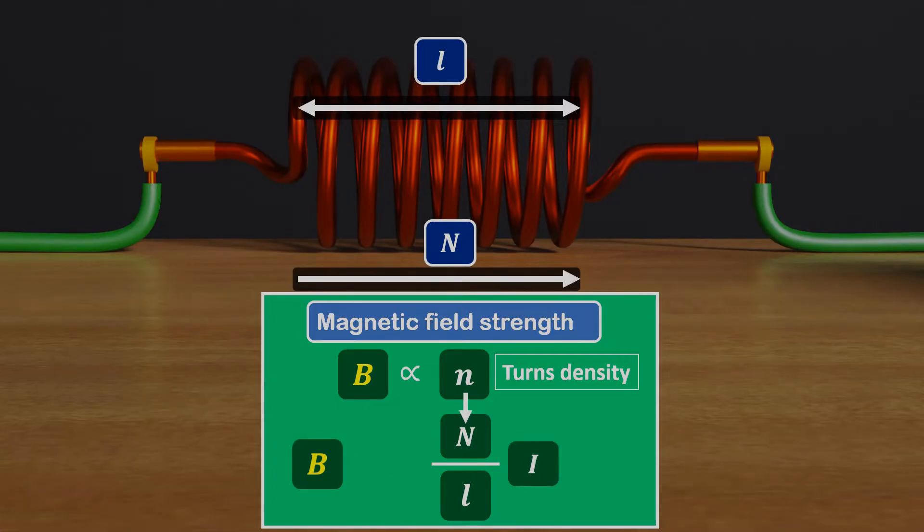By removing the sign of proportionality, we get magnetic field strength B equal to mu0 times N times I over L, where mu0 is the constant of permeability of free space. We are not adding or removing turns, and length remains unchanged.